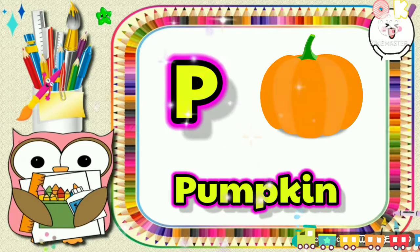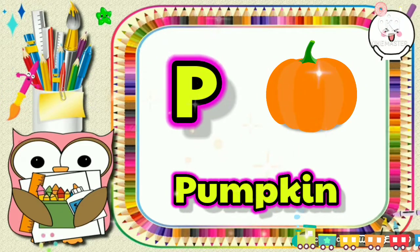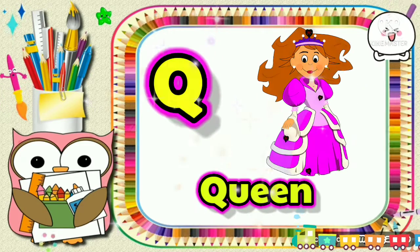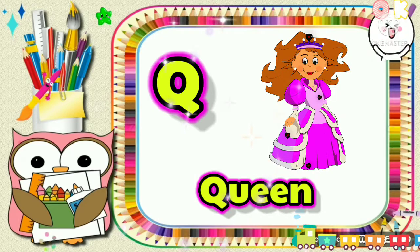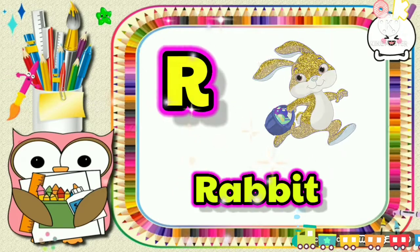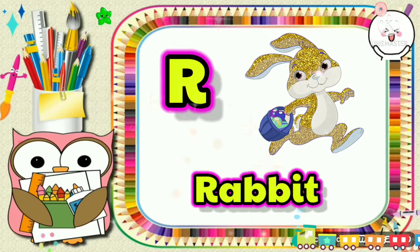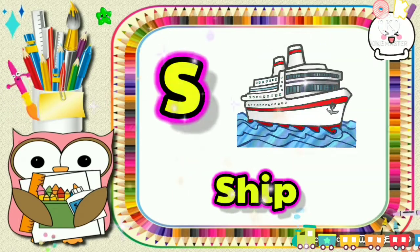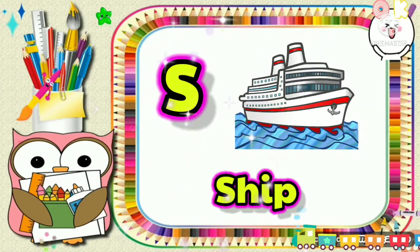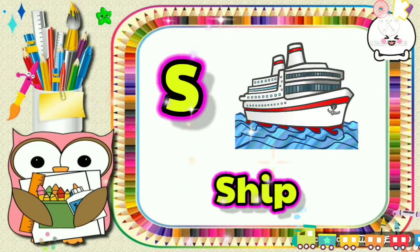B for pumpkin, Q for queen, R for rabbit, S for sheep.